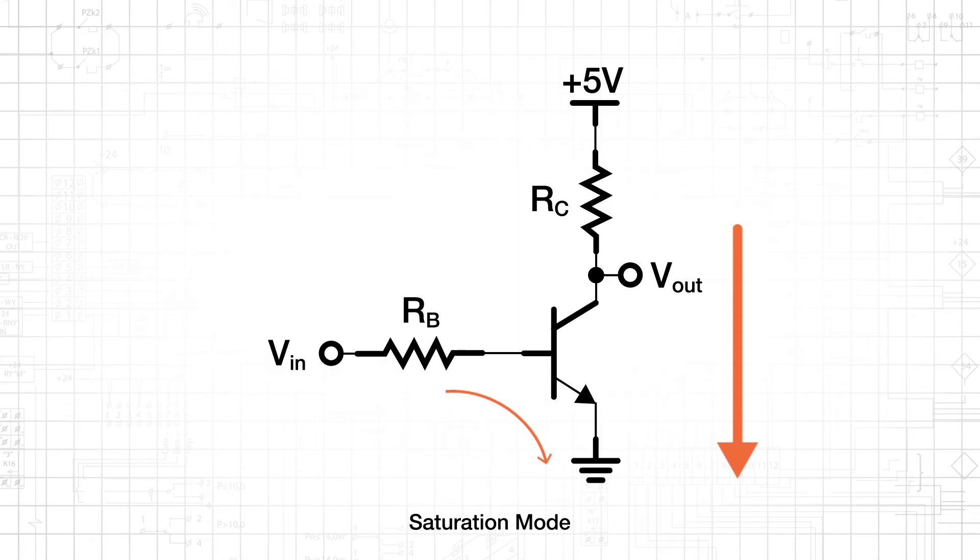When the BE junction and the BC junction are forward biased, the transistor is in saturation mode. The BC junction becomes forward biased when the BC voltage is about 0.5 volts. Since the base to emitter voltage stays near 0.7 volts and the emitter is grounded, the collector voltage will be 0.2 volts. This is called the collector to emitter saturation voltage.